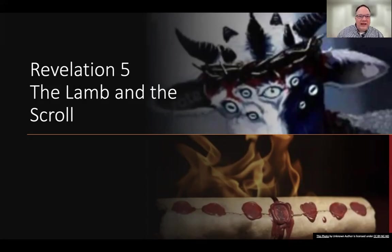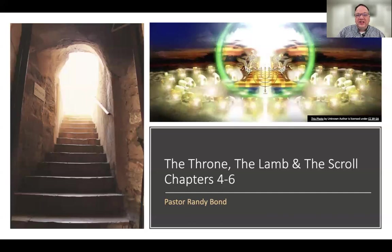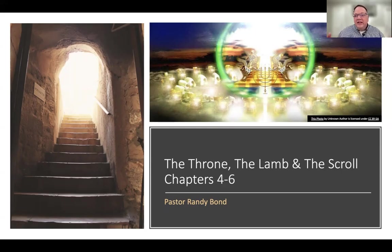This is where we see the revelation of the Lamb and the scroll. This is part of a larger unit — chapters 4, 5, and 6 are tightly connected. We see the throne of God in Revelation chapter 4, we look at the Lamb today, and in chapter 6 we get the full disclosure about the scroll. The scroll is introduced in chapter 5, and we'll talk about that a little bit today.